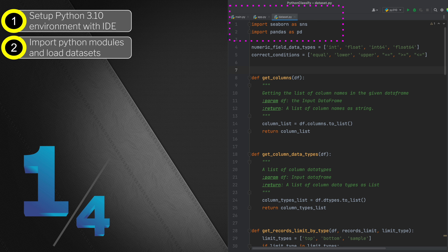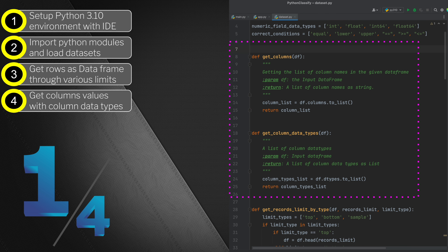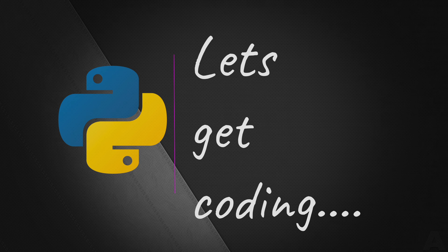Next we are going to learn how to get the rows from our dataset depending on what kind of limits we put while reading the dataset. We'll look at the column values and data types available in the given columns. As we progress, we'll learn how to filter column values based on numeric data. That's where we're going to stop our very first part, and I'll carry on in subsequent videos. So let's get ourselves coding.